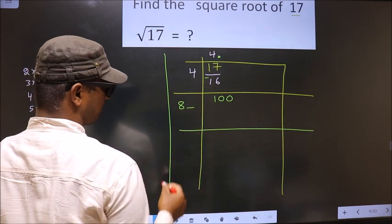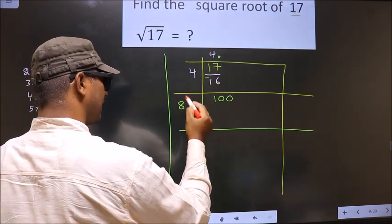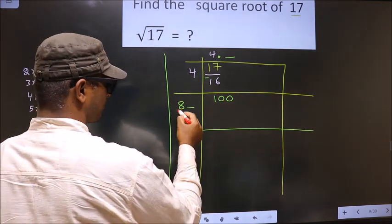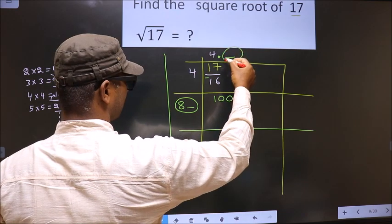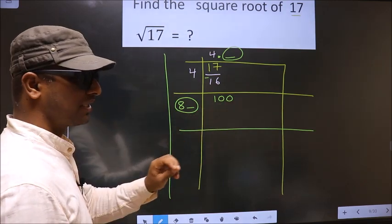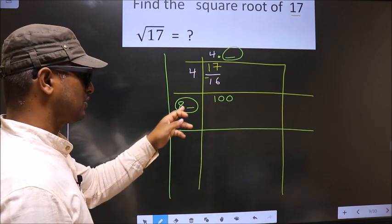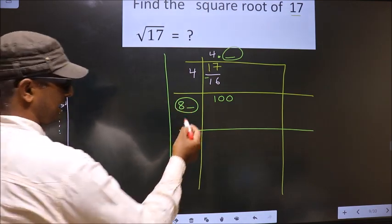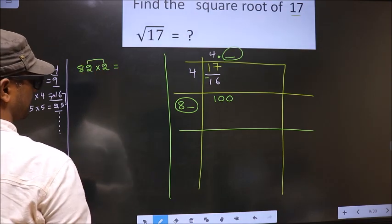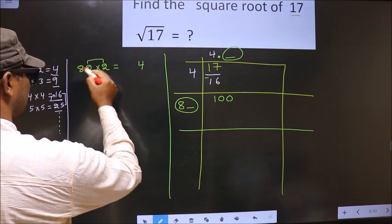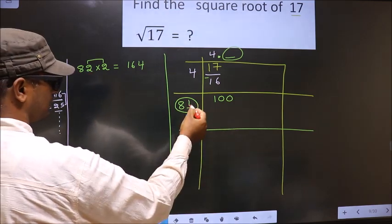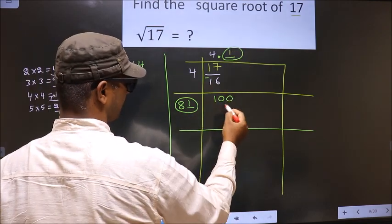Here I have to write a number. The condition is: whatever number I write here, I should write the same number here as well. And when you multiply this number by this number, the resulting number should be either equal to or smaller than this — but not larger. If we take 2: 2 into 2 is 4, 2 into 8 is 16 — we get 164, which exceeds 100. So don't take 2. Take 1 instead. So 1 here, 1 here, and 81 here.